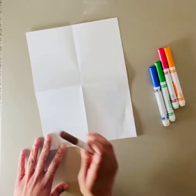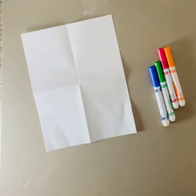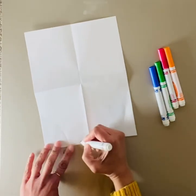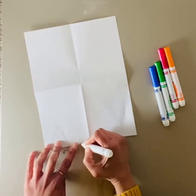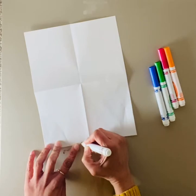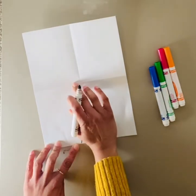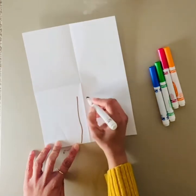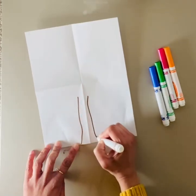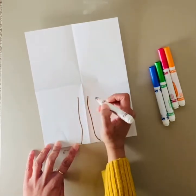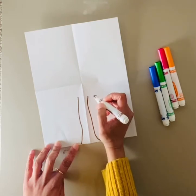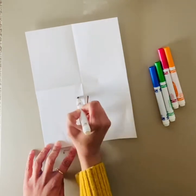We're gonna start off by drawing our tree trunk right at the bottom of the page. Make sure it doesn't go all the way up to the halfway mark and stop right there.